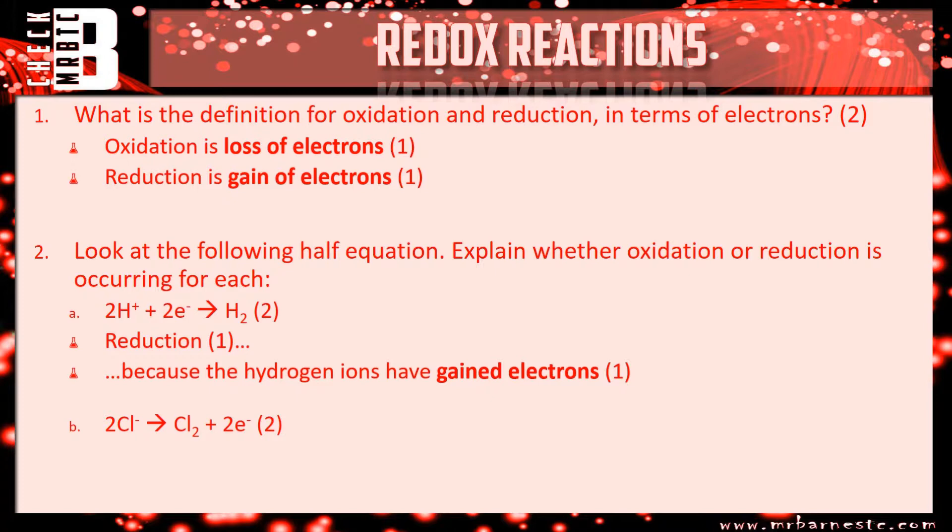Therefore for your chloride ions, they've gone back from chloride, having a full outer shell with 8 electrons in the outer shell, back to the chlorine atoms, the chlorine molecule, and they've lost 2 electrons, therefore it's oxidation. So one mark for oxidation, one mark for saying the chloride ions have lost electrons.